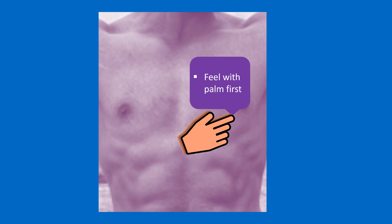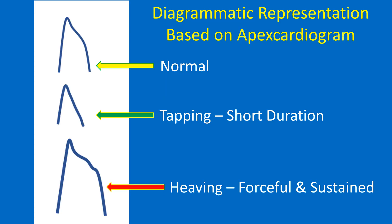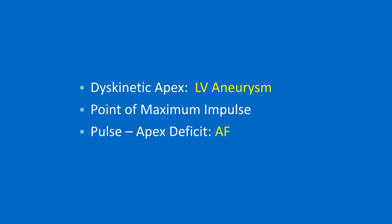Palpation in held expiration and in the left lateral position may help in localization. Normal apex beat is felt in the fifth left intercostal space, typically about 1 cm medial to the mid-clavicular line. Tapping apex beat is the palpable counterpart of a loud first heart sound in mitral stenosis. A forceful apex beat is seen in regurgitating lesions like aortic and mitral regurgitation, also called a hyperdynamic apex. Heaving apex beat is both forceful and sustained and is characteristic of left ventricular hypertrophy in severe aortic stenosis.